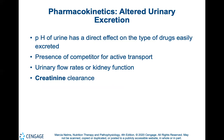Urinary excretion of drugs can change as a result of numerous mechanisms. The pH of the urine has a direct effect on the type of drugs easily excreted. Nutritionally, different foods can affect the pH of the urine, though these effects are difficult to predict due to variations in digestion and metabolism. Urinary excretion can also be altered by changes in urinary flow rate or kidney function, which may result from another medication, a disease or injury, or the aging process. Changes in creatinine clearance significantly alter the effectiveness of medication. If an individual has renal insufficiency for any etiology, drug levels may be adjusted to ensure therapeutic levels.